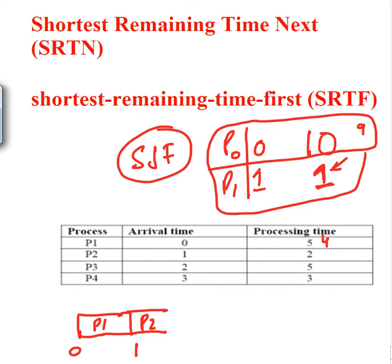P2 runs for one unit of time. At time two, P3 arrives with a burst time of five units. P2 has one unit remaining versus P3's five, so we carry on with P2. P2 completes up to time three.